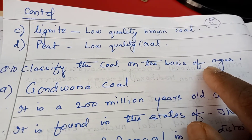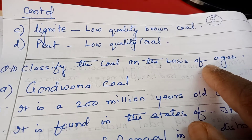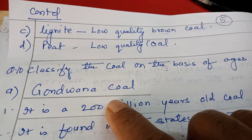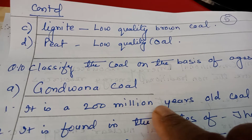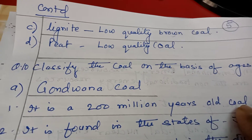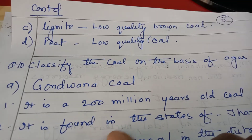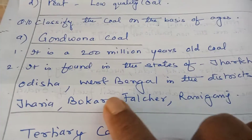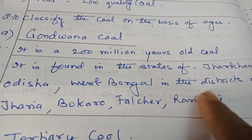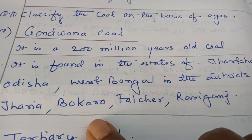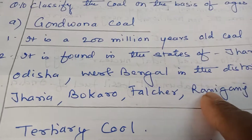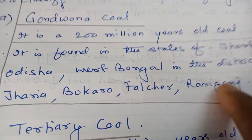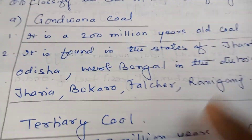Classifying coal on the basis of age: first is Gondwana coal, which is 200 million years old. It is found in the states of Jharkhand, Odisha, and West Bengal, in the districts of Jhariya and Bokaro in Jharkhand, Talcher in Odisha, and Raniganj in West Bengal.